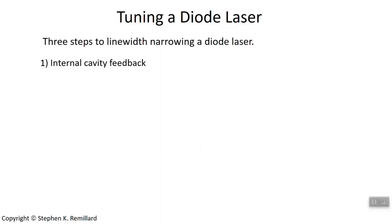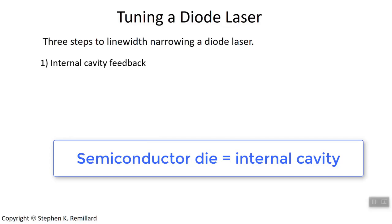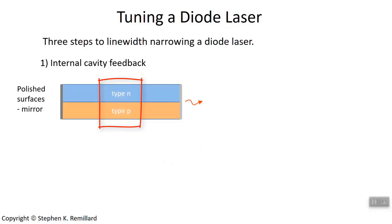First thing is you need internal cavity feedback. The internal cavity is the semiconductor die, the P-N junction. The surfaces are polished and metallized so that light reflects off of them. The backside surface has a very high reflection coefficient, so light does not go out the back surface. The surface on the right is also polished and prepared, possibly metallized, so it has a reflection coefficient that's not exactly one, but is high. There's a careful compromise in preparing the front surface. Photons can escape.